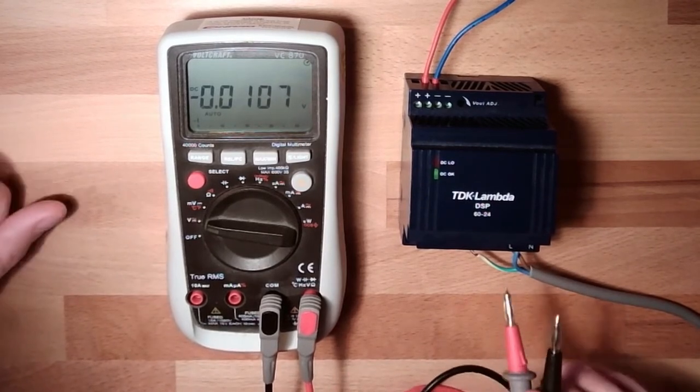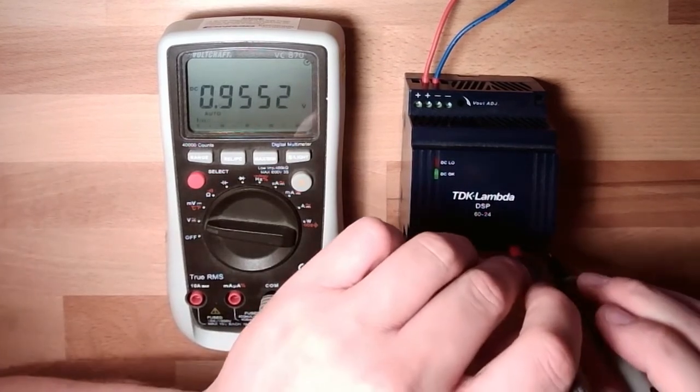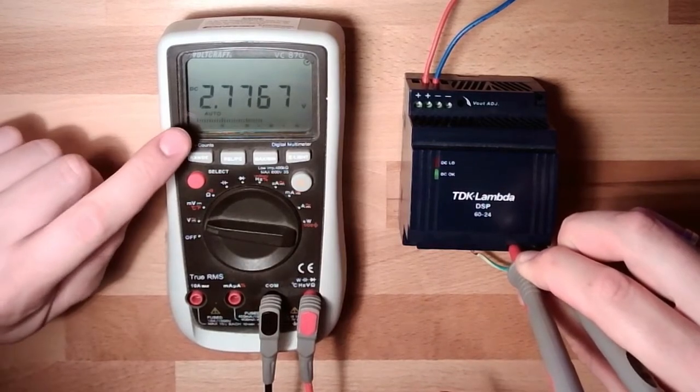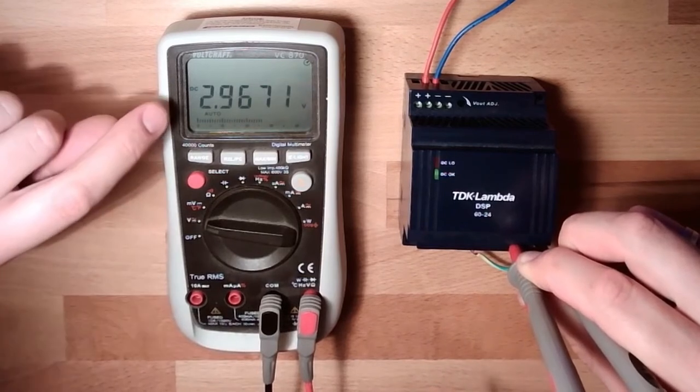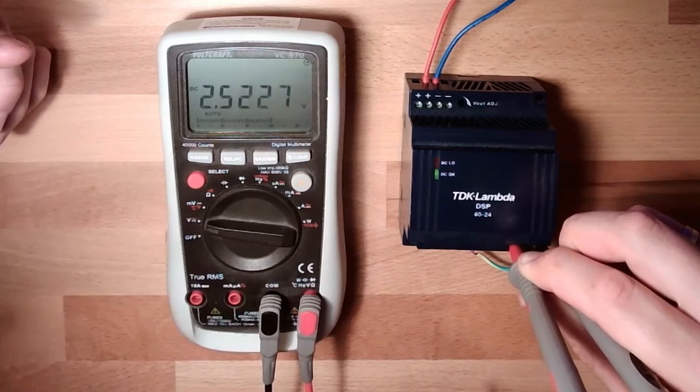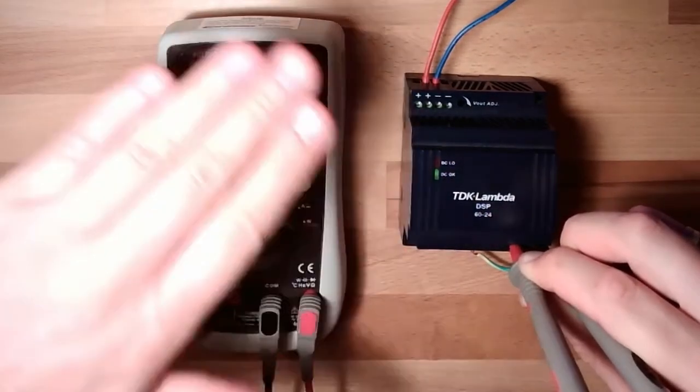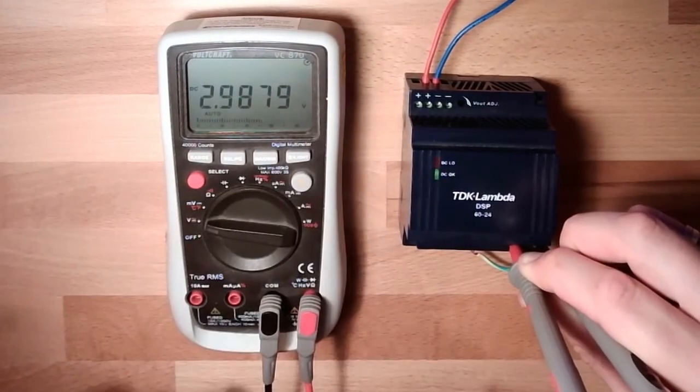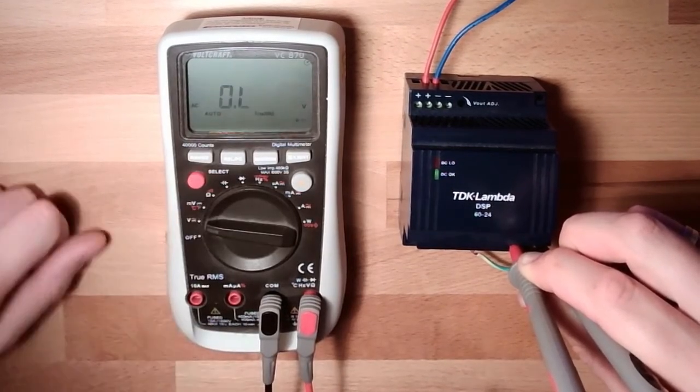We could even measure here this 230 volts. And then we see, it's measuring, looks strange, two volts. Why is this? Because we are in DC. We are in DC. And as we know, we now measure the mean value and the standard mean value of an alternating current is zero.